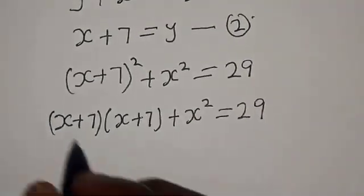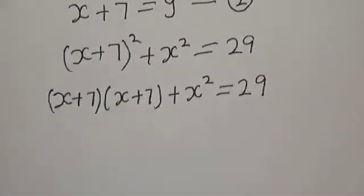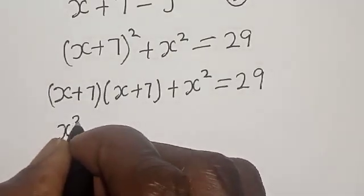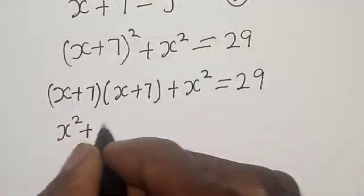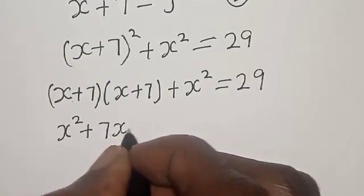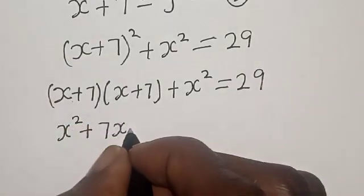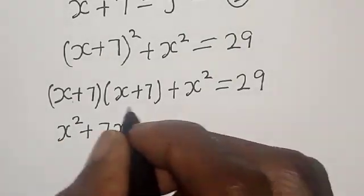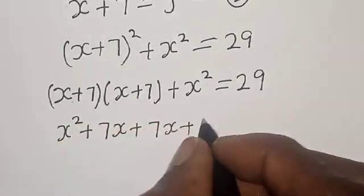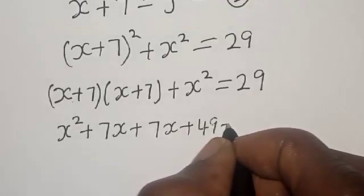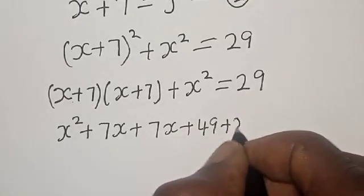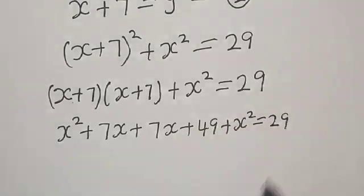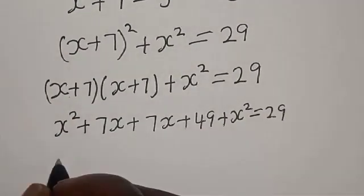Now let's open this bracket: x times x gives x squared, plus x times 7 gives 7x, plus 7 times x gives another 7x, plus 7 times 7 gives 49, plus x squared is equal to 29.